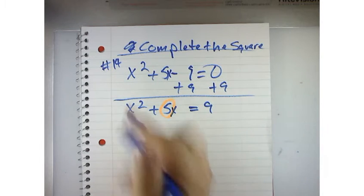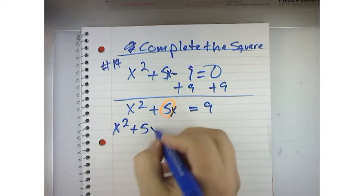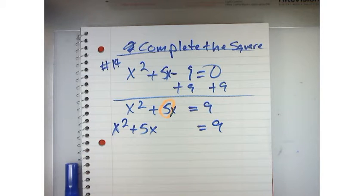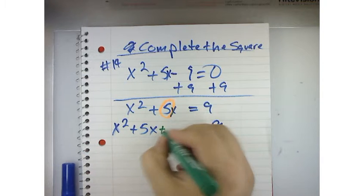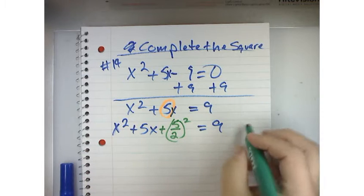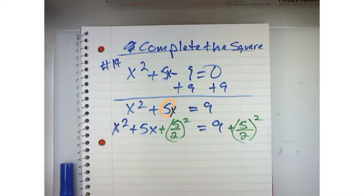I'm going to say x squared plus 5x equals 9. And then what I'm going to do is take plus 5 over 2 and square it on both sides. That's what makes it legal. Whatever you do on one side, you have to do on the other.